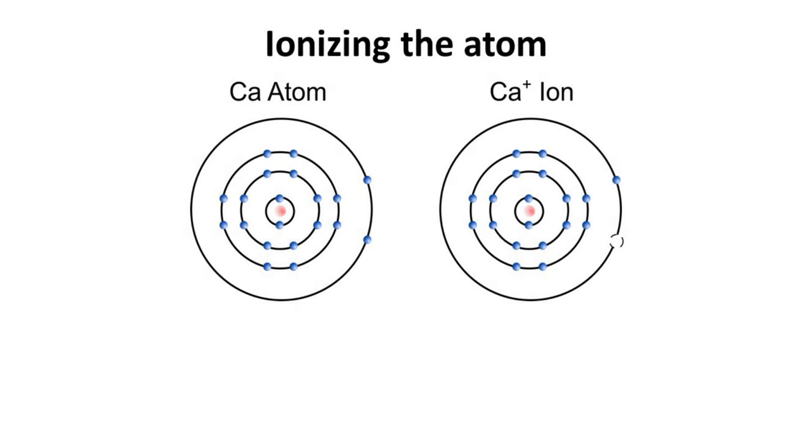Ions are atoms that have gained or lost electrons. The calcium ion, one of the many used for quantum computation, is shown here. The calcium atom has 20 electrons, with two valence electrons. For the calcium plus ion, one electron has been knocked out of its valence shell.